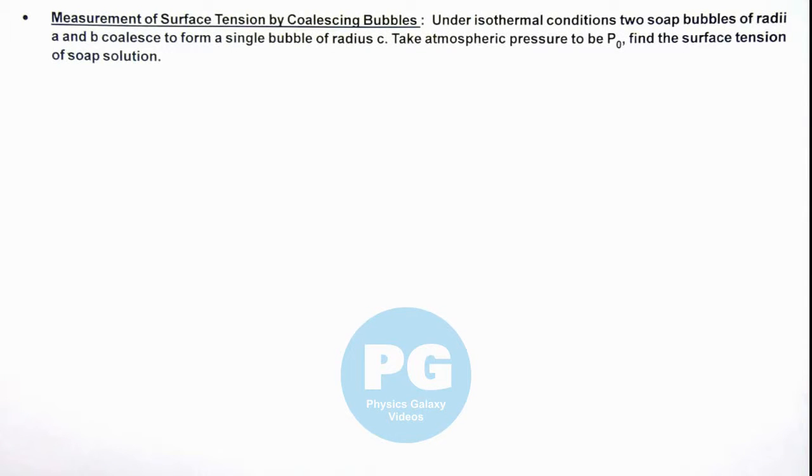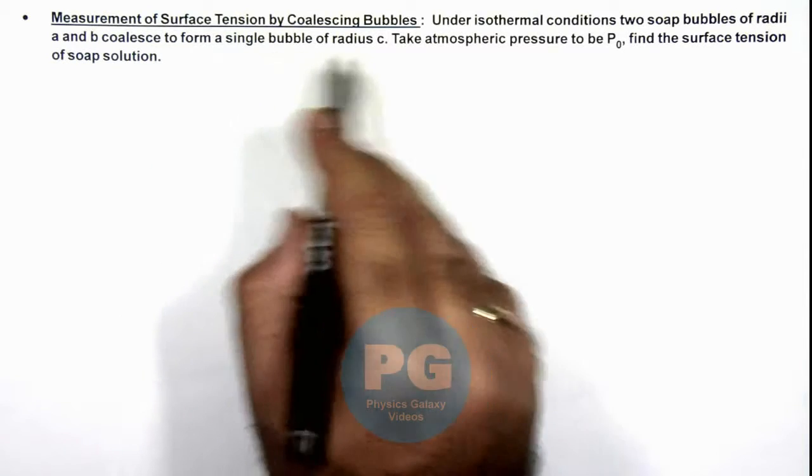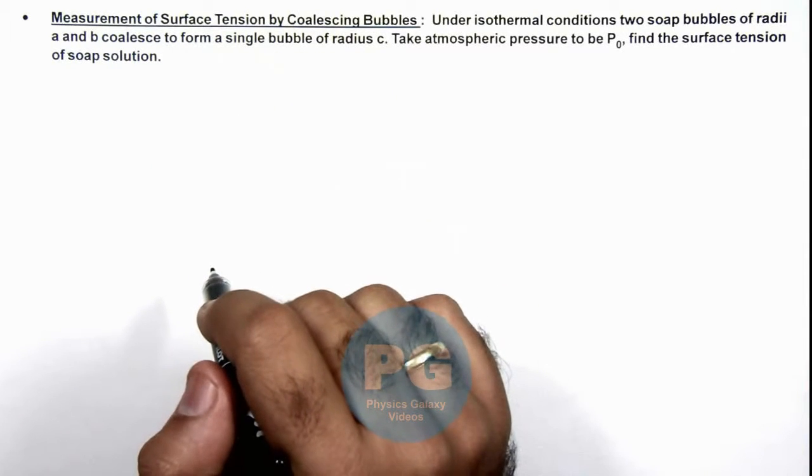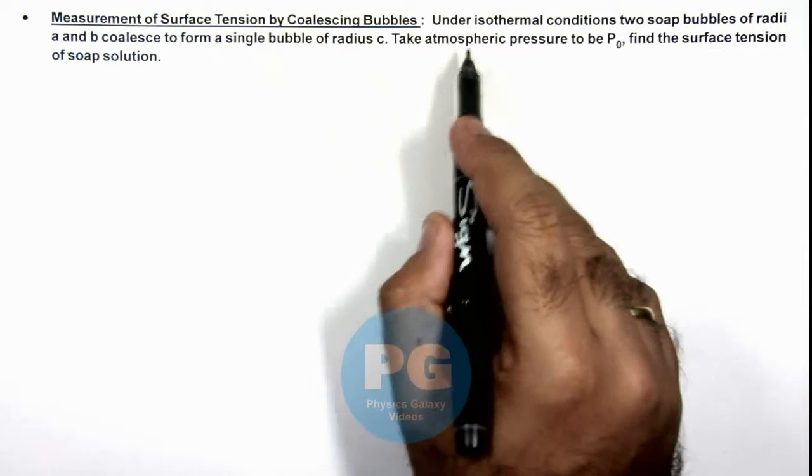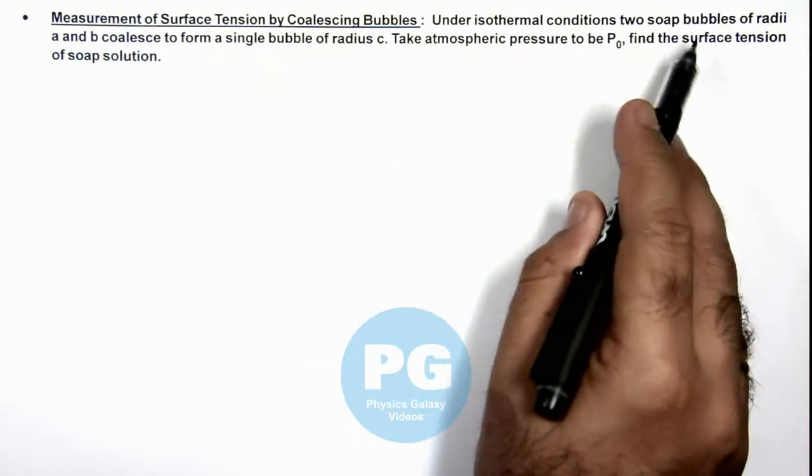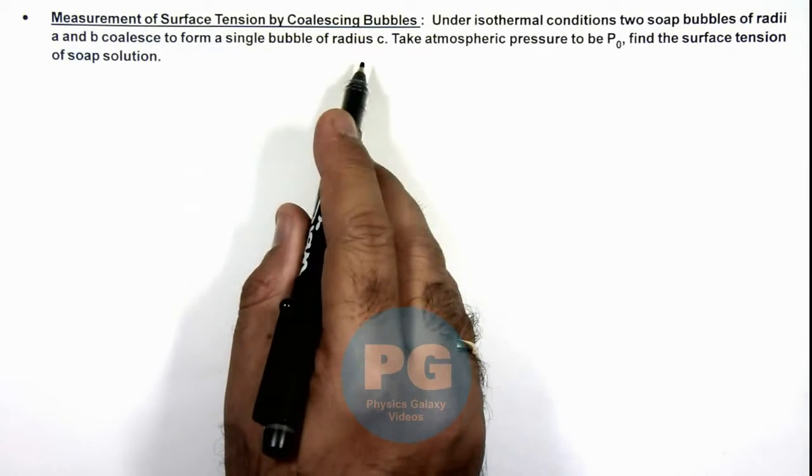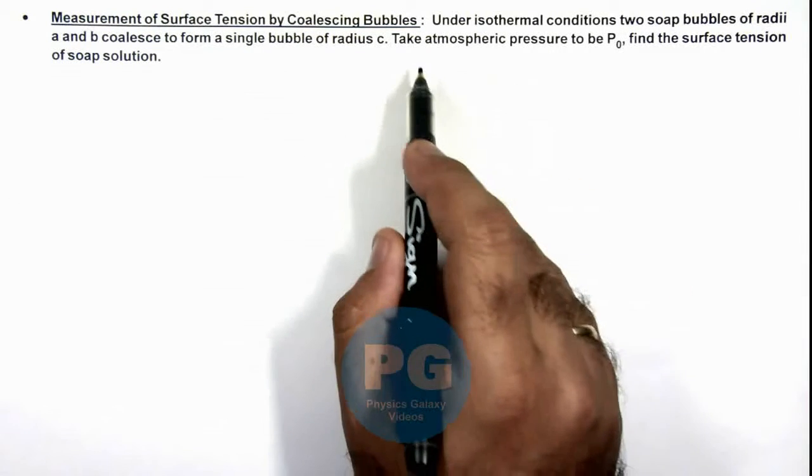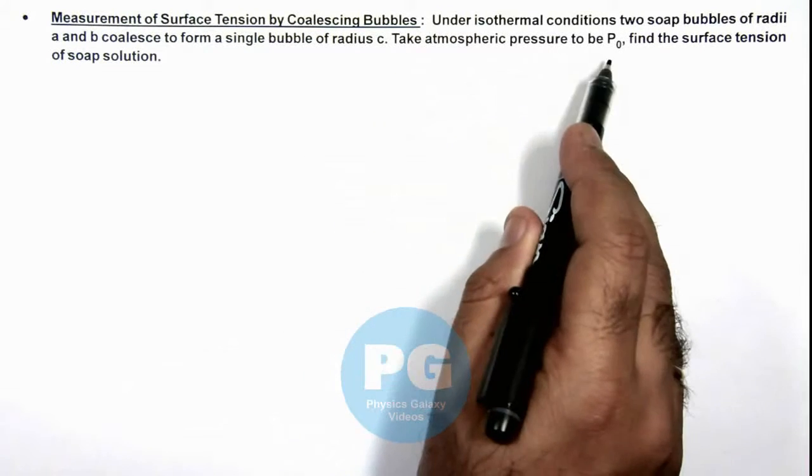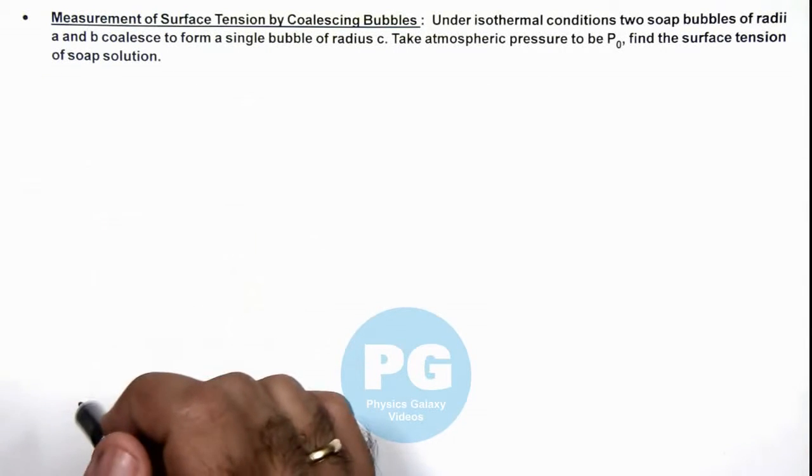In this illustration, we'll study the measurement of surface tension by coalescing bubbles. We are given that under isothermal conditions, two soap bubbles of radii a and b coalesce to form a single bubble of radius c. We are given that atmospheric pressure is P₀, and we are required to find the surface tension of the soap bubble.